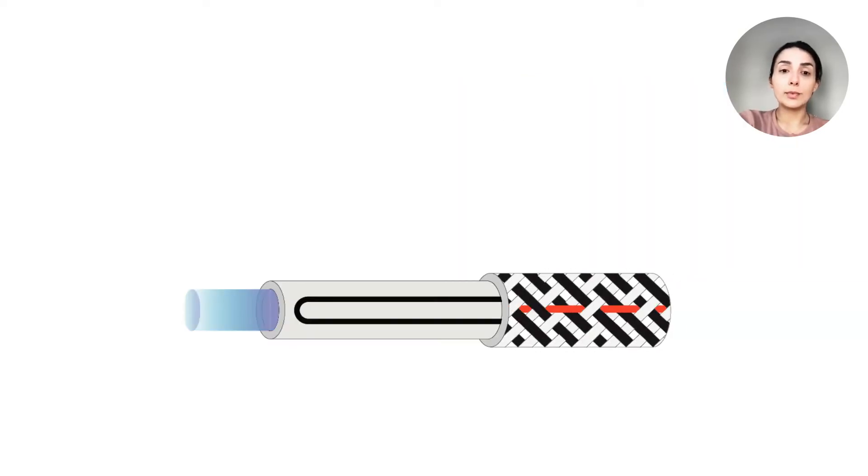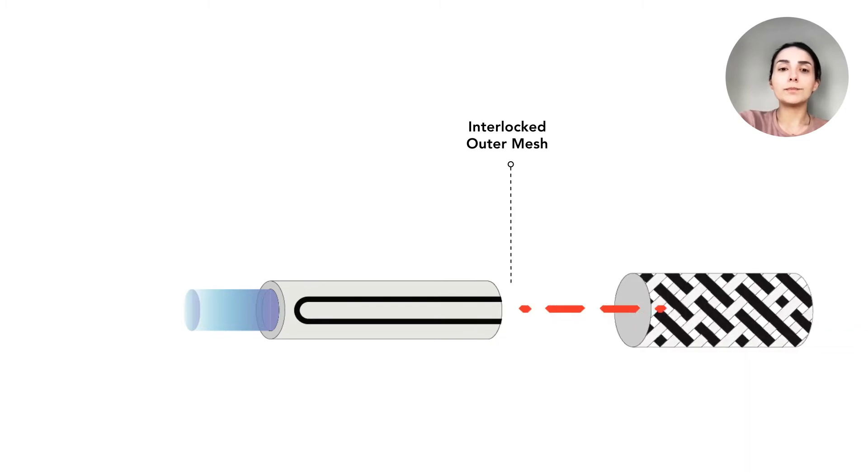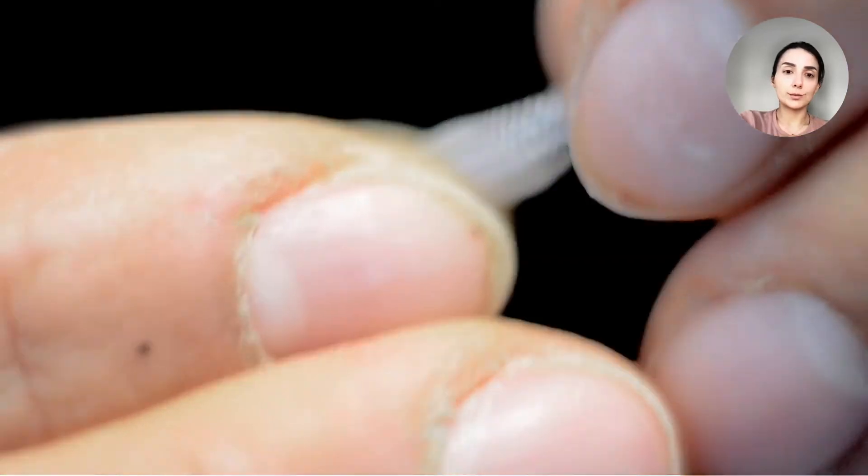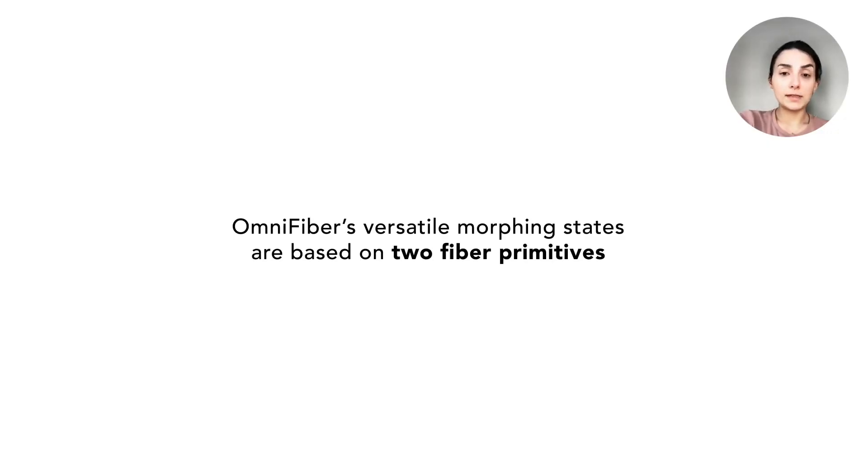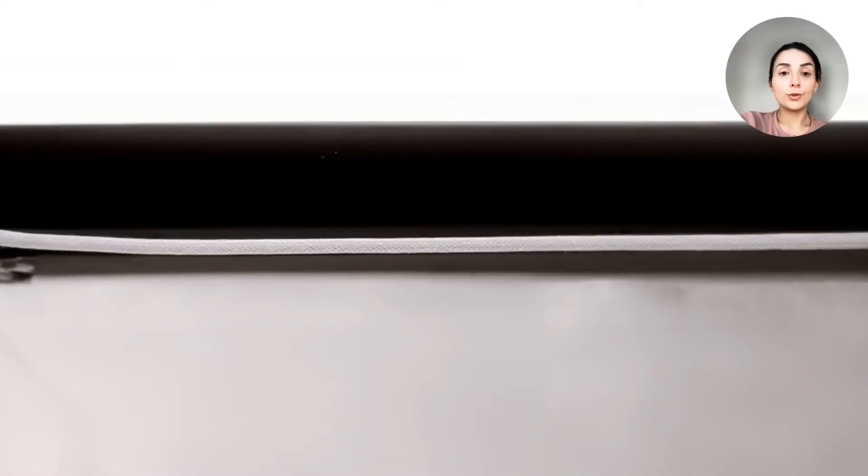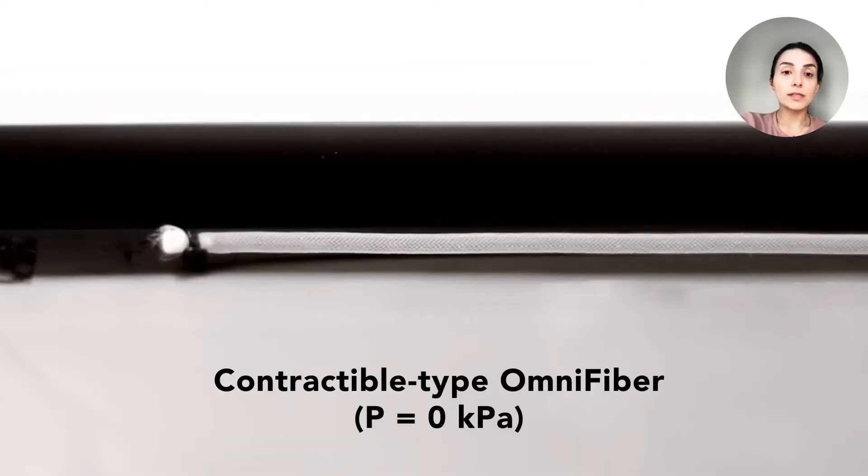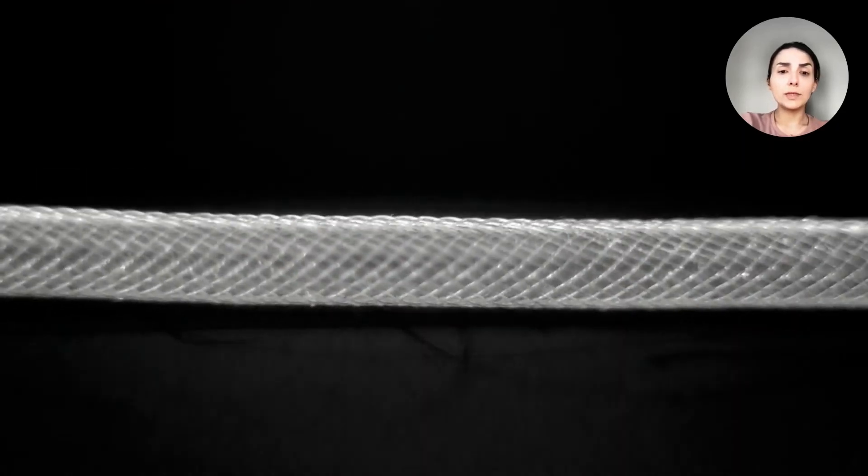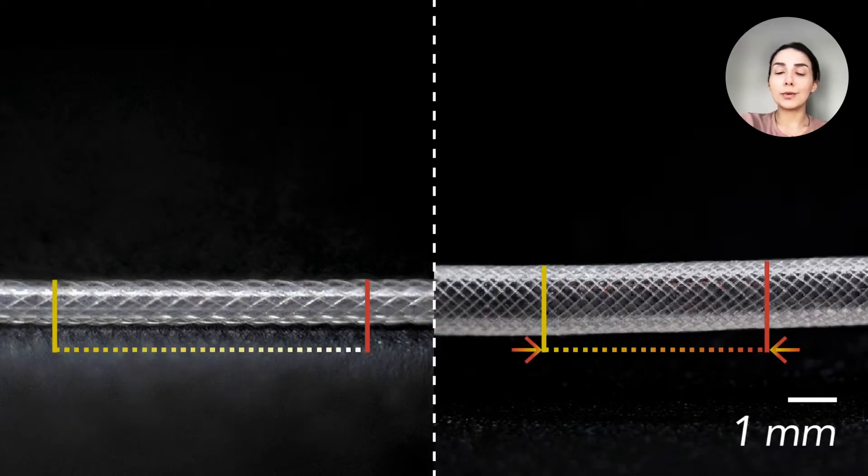The next step is the outer sleeving of the sensorized microtubule. This is where the morphing state is programmed into the fiber device. OmniFiber's morphing states build on two basic motion primitives with reverse mechanisms, a contractible type and an extensible type fiber. The contractible fiber is a traditionally used artificial muscle in soft robotics, also known as McKibben muscles. When provided compressed fluids, these muscles contract about 32% in length and expand radially.